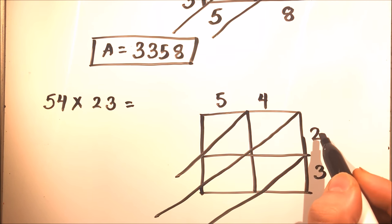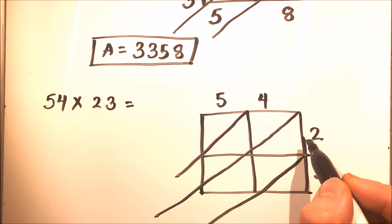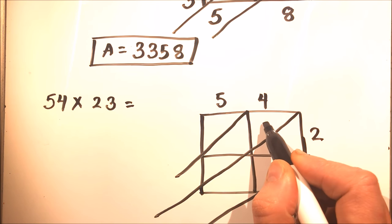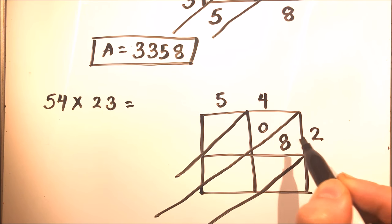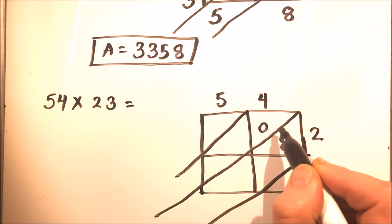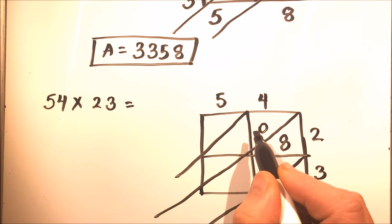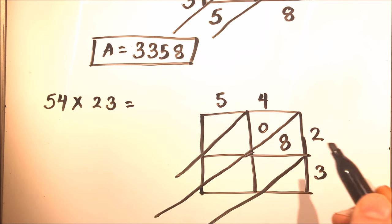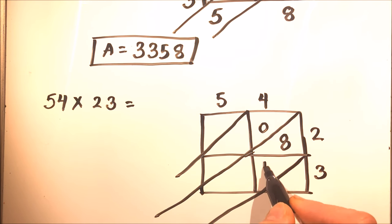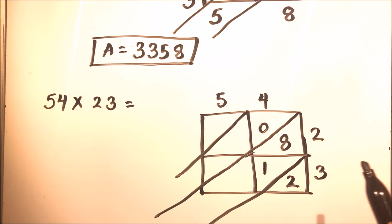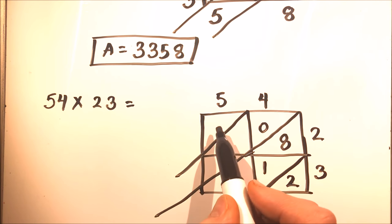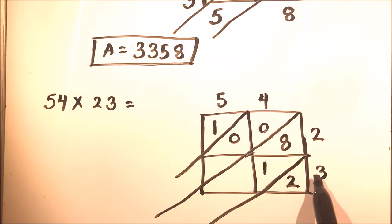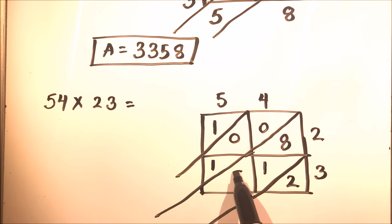Now we multiply: two times four is eight, so we write zero eight. Three times four is twelve, so we write one and two. Two times five is ten, so we write one and zero. Three times five is fifteen, so we write one and five.